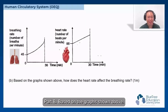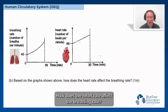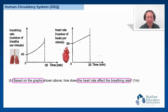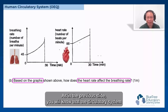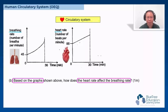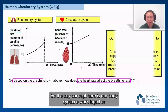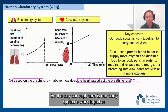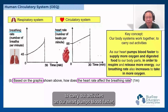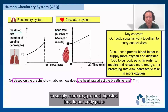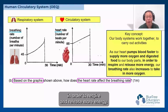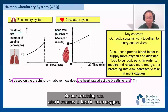Part B: Based on the graph shown, how does the heart rate affect the breathing rate? As in the previous slide, we know that the circulatory system works together with the respiratory system. The key concept is that our body systems work together to carry out activities. As our heart pumps blood faster to supply more oxygen and digested food to our body parts in order to respire and release more energy, our breathing rate also increases to take in more oxygen.